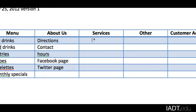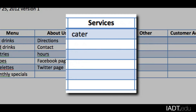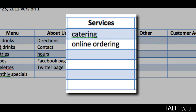In the Services section, we could have some catering — perhaps for big parties, birthdays, or corporate events. And like I mentioned before, I want to give customers the option to do some online ordering. I can't think of any other services right now, but I can always add to it later.